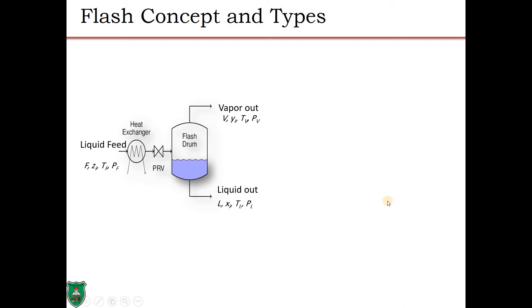We can do this using a combination of pressure and temperature operations — increasing or decreasing temperature and pressure using a heat exchanger and pressure-regulating valve — to end up in the flash drum, which separates the two-phase mixture into a vapor stream and a liquid stream.